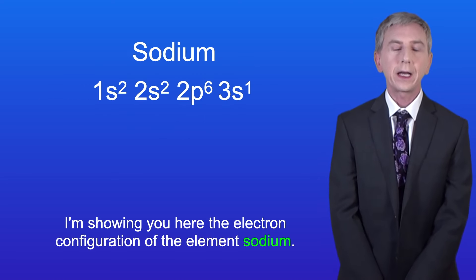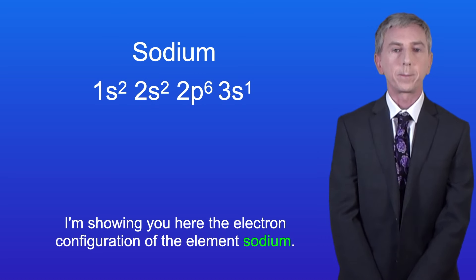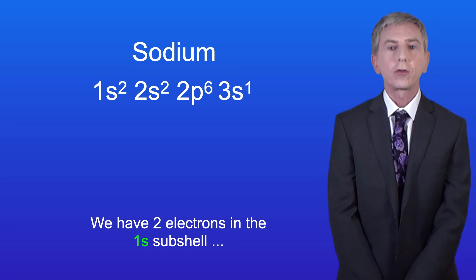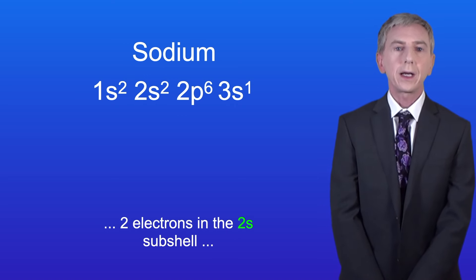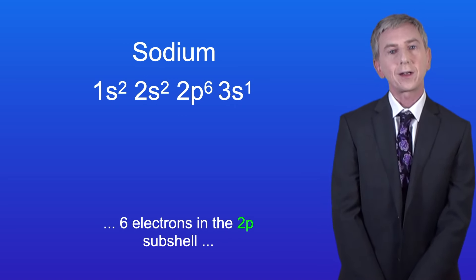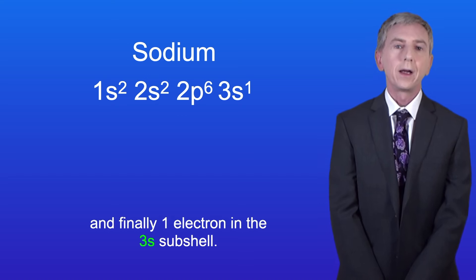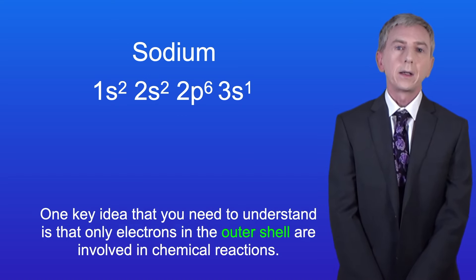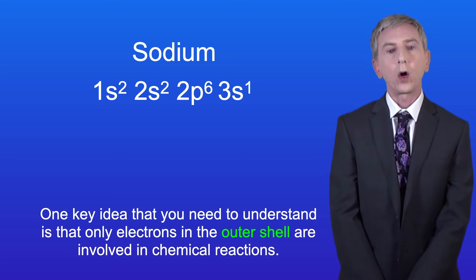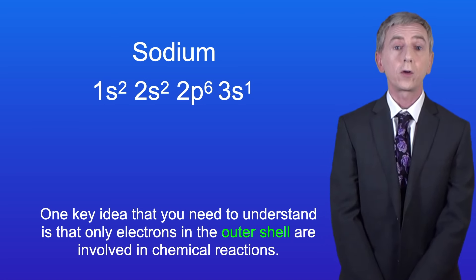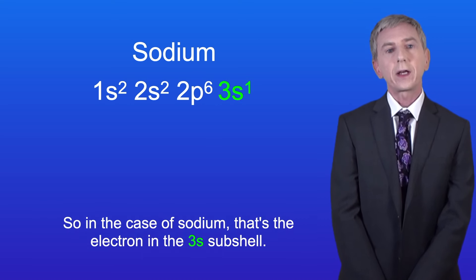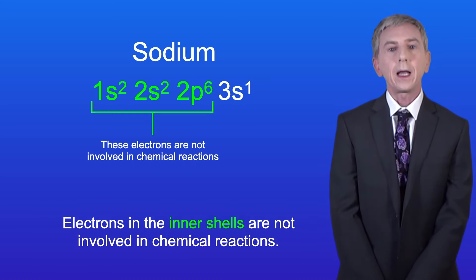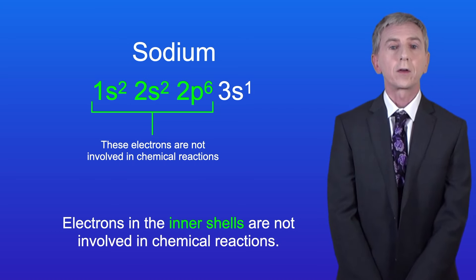I'm showing you here the electron configuration of the element sodium. Sodium has 11 electrons. We've got two electrons in the 1s subshell, two electrons in the 2s subshell, six electrons in the 2p subshell, and finally one electron in the 3s subshell. Only electrons in the outer shell are involved in chemical reactions, so in the case of sodium that's the electron in the 3s subshell. Electrons in the inner shells are not involved in chemical reactions.